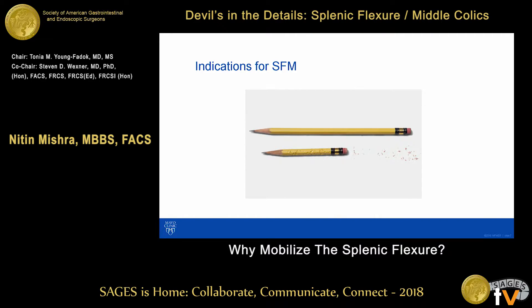This is where the controversy starts. The colon reaches, but it is smaller than what you want in terms of length. This could represent the length of the specimen, or the length of the colon remaining which you want to anastomose. It is one thing making the colon reach the rectum, but it is another thing about what length you actually have.